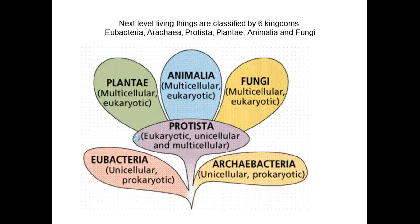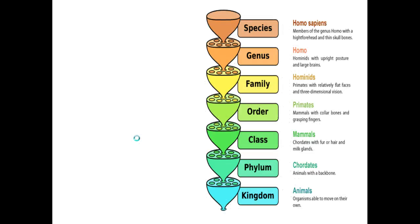The six kingdoms are: eubacteria, archaea, protista, plants, animals, and fungi. We further classify from kingdom to phylum, then class, order, family, genus, and species.